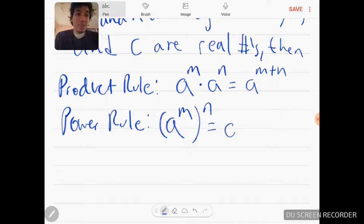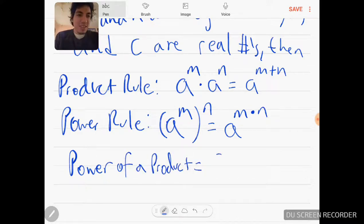Power rule: a to the M raised to the N, which is going to be a to the M times N. Next rule is power of a product, which is AB being raised to the N, which means you get to distribute the N into each base in the exponent, so it's a to the N, B to the N.